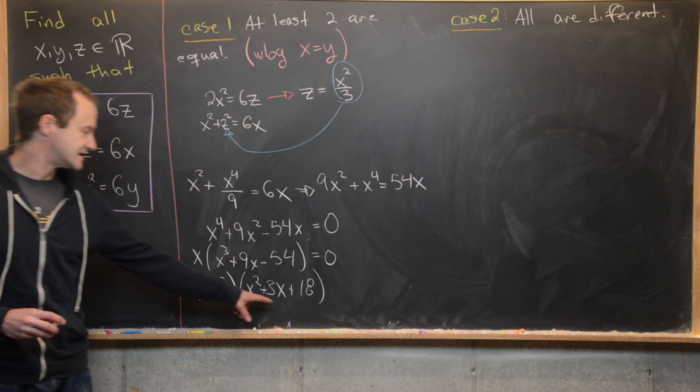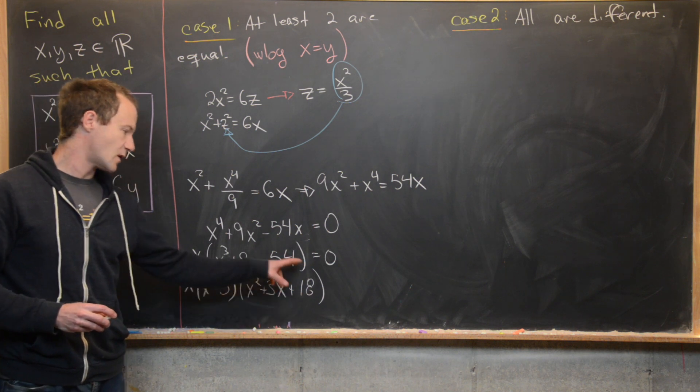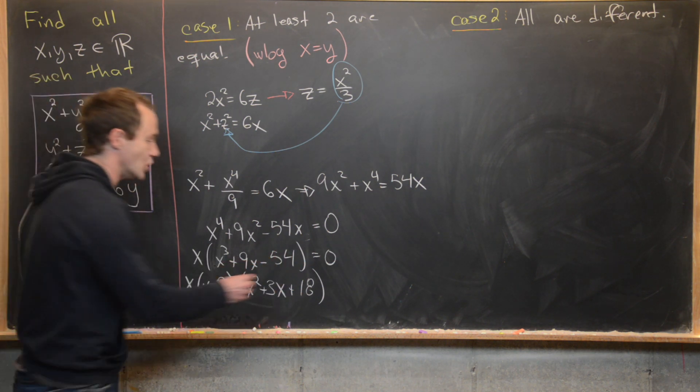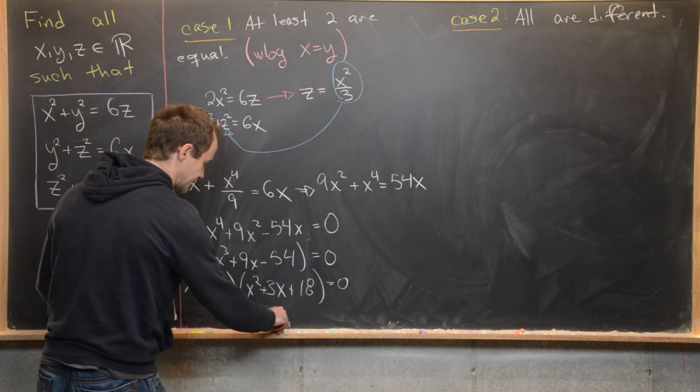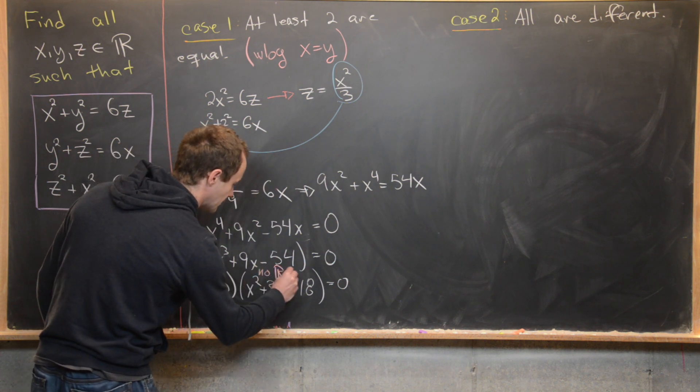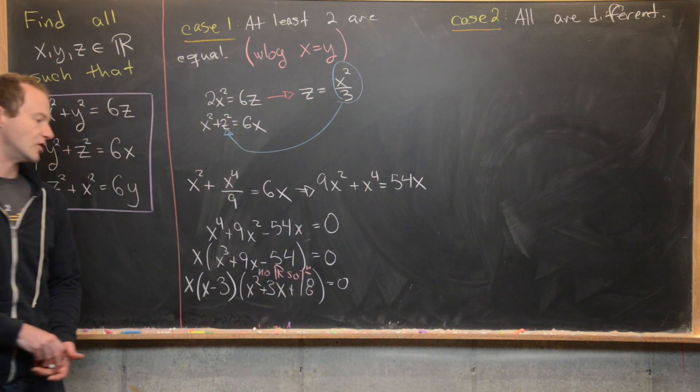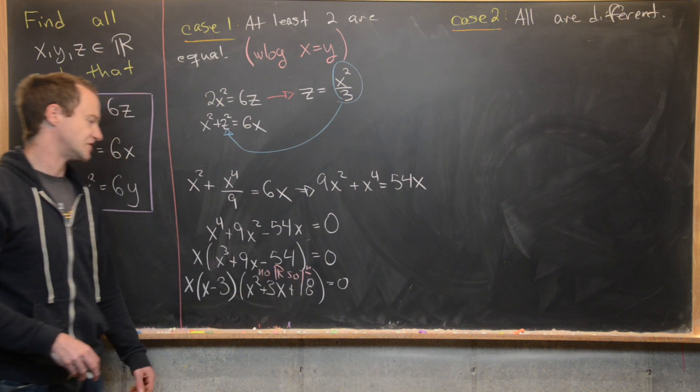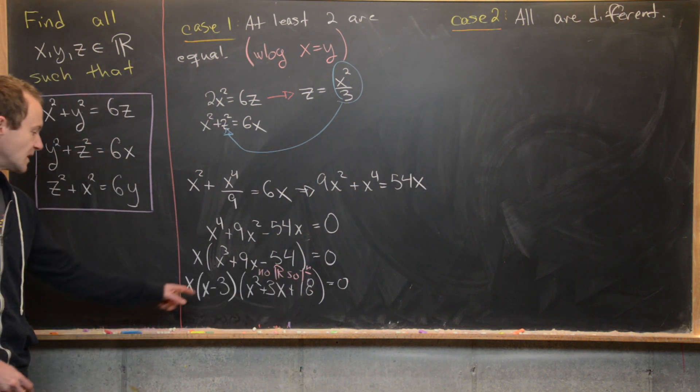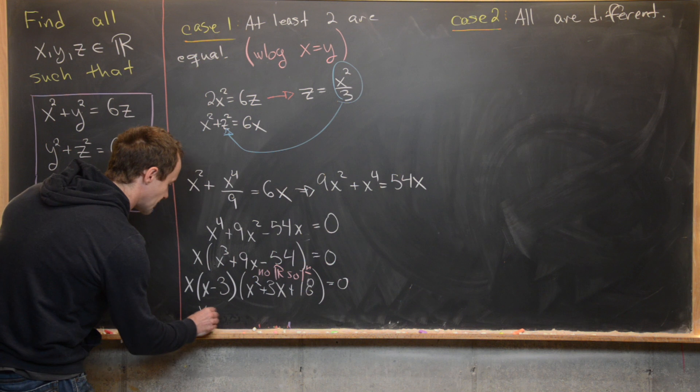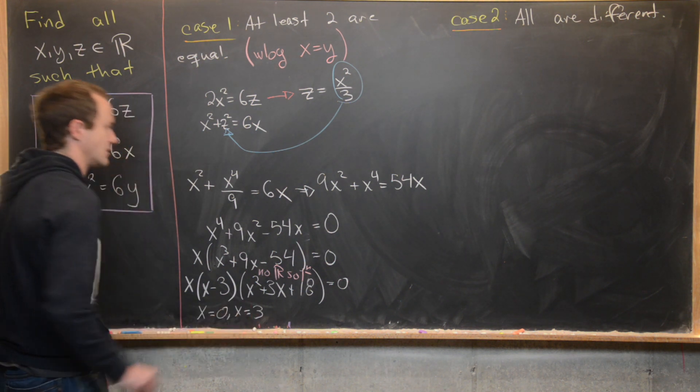And then what you want to notice is that this quadratic polynomial gives you no real solutions. So there are no real solutions to this equation from this factor, which means our only real solutions are x = 0 and x = 3.